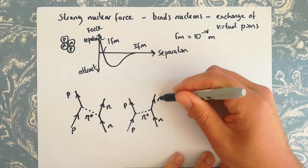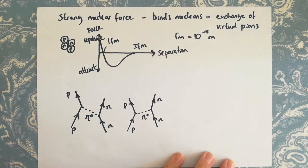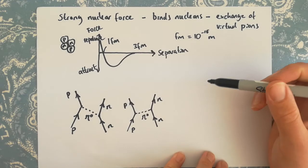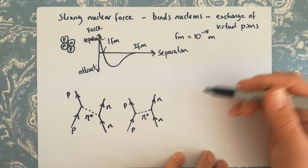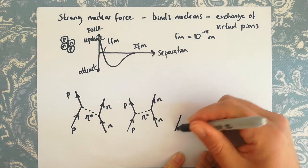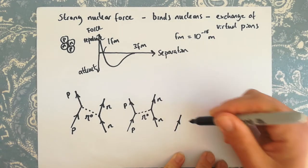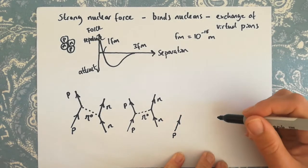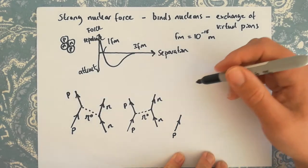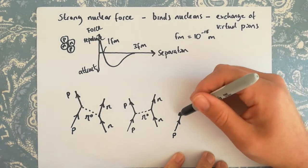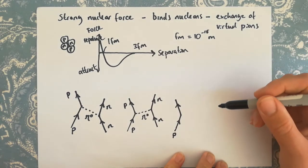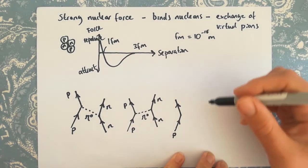We could equally draw the proton emitting the neutral pion instead — this is a slightly different time ordering of the same interaction.